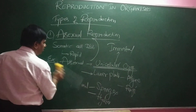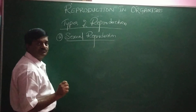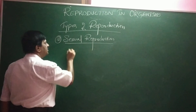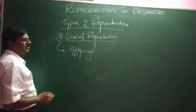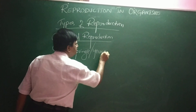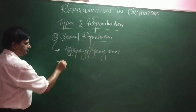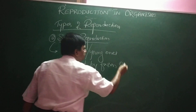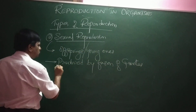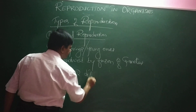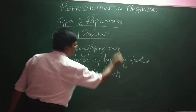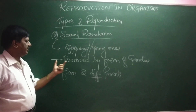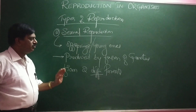Now we step into the next topic: sexual reproduction. This is the second type of reproduction. In sexual reproduction, the formation of offspring is produced by the fusion of gametes from two different parents.